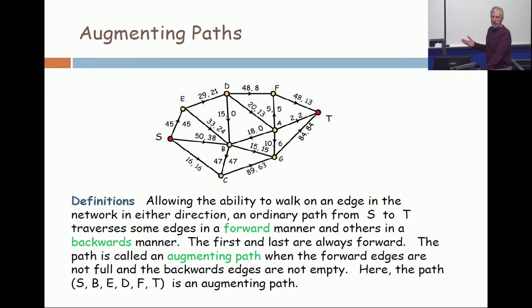This is just a review of last time. You go S to B, that's forward, it's not full. You go B to E, that's backwards, it's not empty. E to D is forward, not full. D to F, forward, not full. And F to T, forward, not full. Any such path is called an augmenting path.